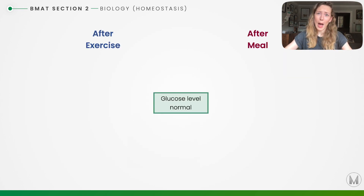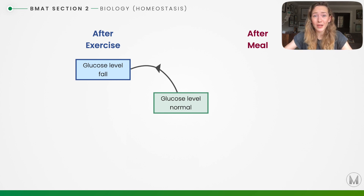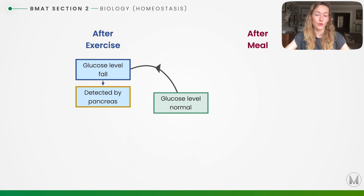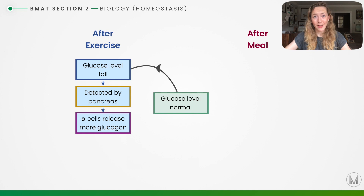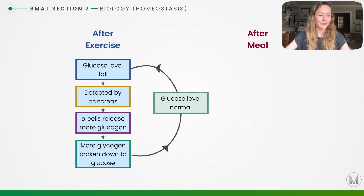Here's a flow chart of what happens after we exercise and after we eat a meal. After exercise, glucose levels fall because glucose has been used in respiration to allow muscles to contract. That fall is detected in the pancreas and the alpha cells release more glucagon. Glucagon converts stored glycogen in the liver back into glucose to go into the bloodstream, returning glucose levels back to normal.